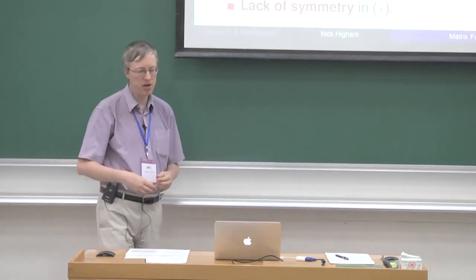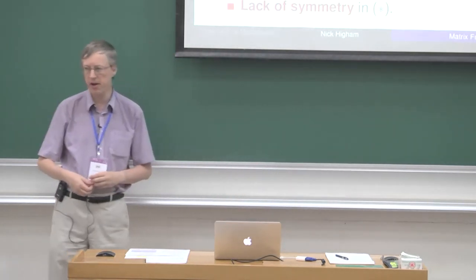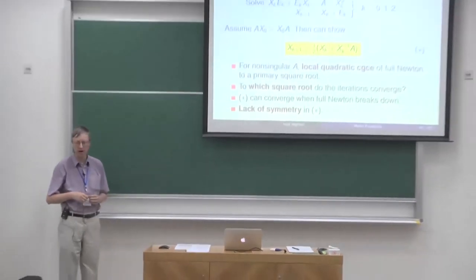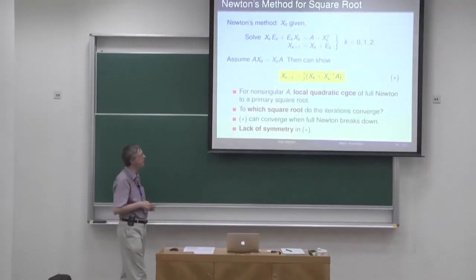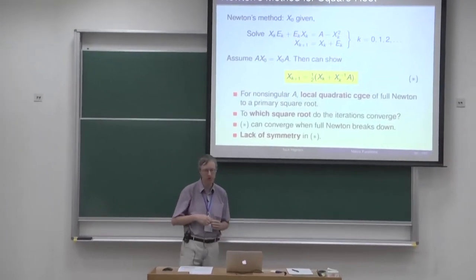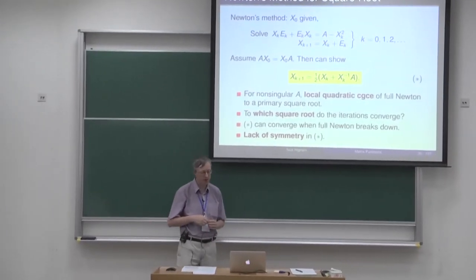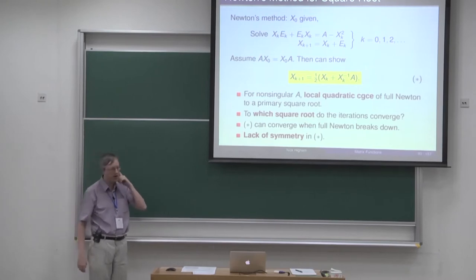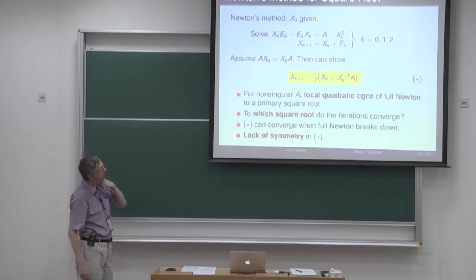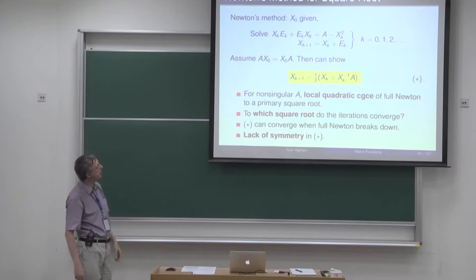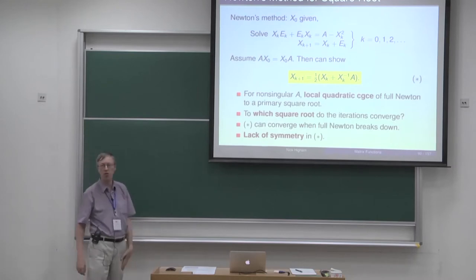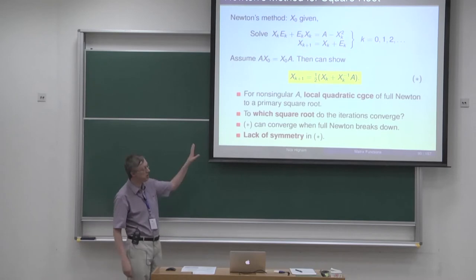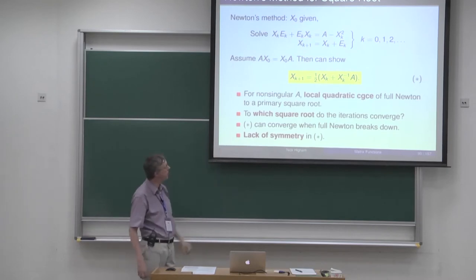So this is where we finished yesterday — the matrix square root — and what I want to look at now is convergence of this iteration, how to prove convergence of it. Remember, this is Newton's method applied to the equation x squared minus A is nought, with the simplifying assumption that A commutes with x nought. If A doesn't commute with x nought, this is not the same as the full Newton's method.